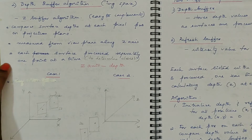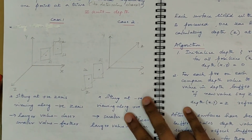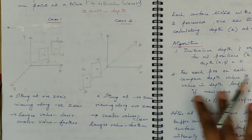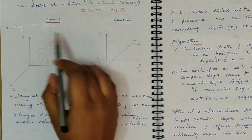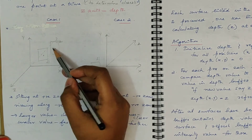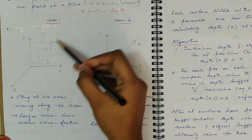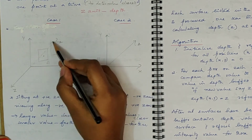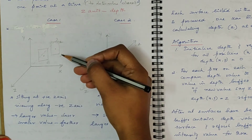In the depth buffer algorithm, there will be two cases. The first case is where you are sitting at the positive Z axis and viewing along the negative Z axis. In this Cartesian coordinate system, there are two surfaces in the negative Z axis. So you are sitting at positive Z and viewing along the negative Z axis. These are the two surfaces, S1 and S2 — which will be closer and which will be farther is what you have to determine.